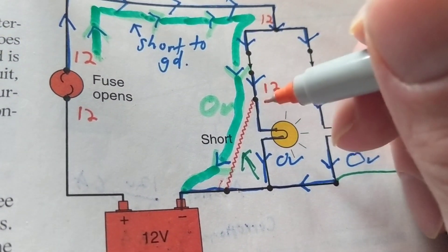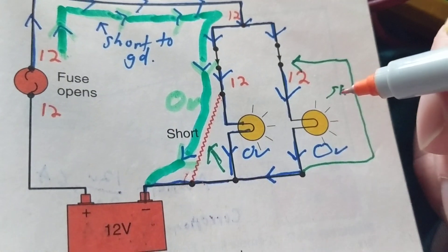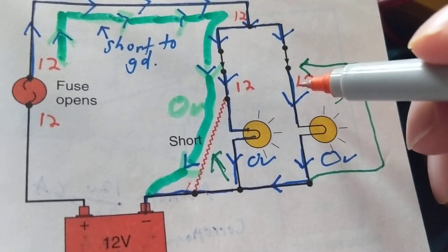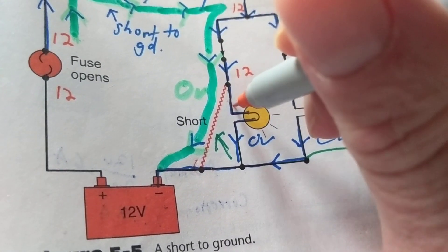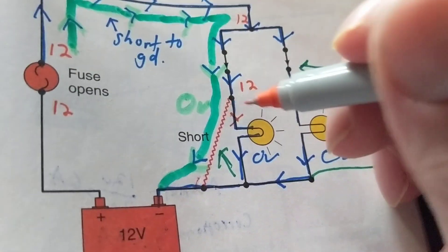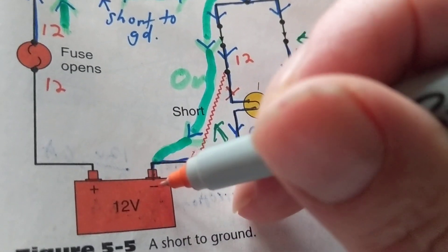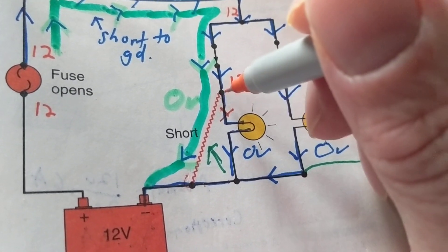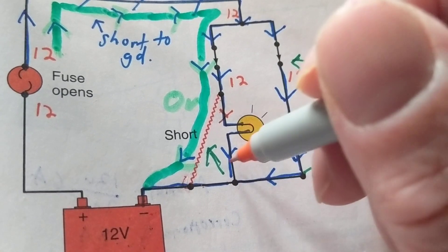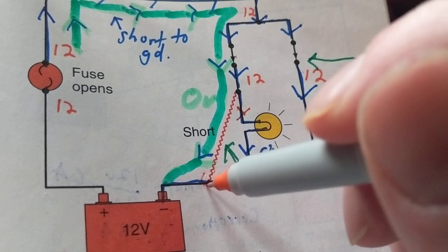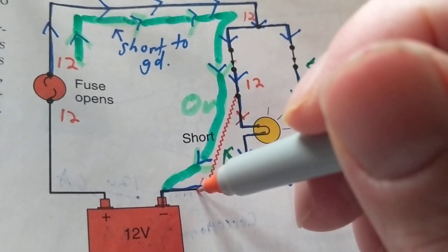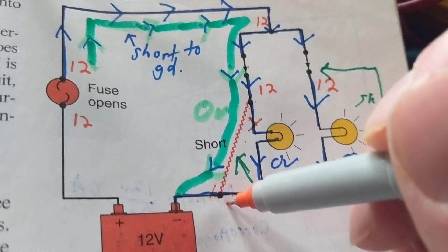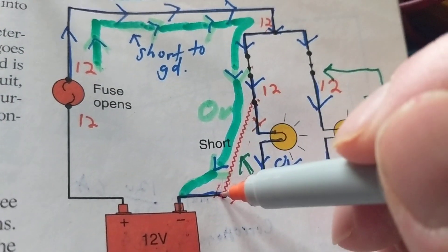When a short is placed here, it completely bypasses the load. A viewer asked: if I put a short here, why does it bypass the other bulb too? The wire broke and touched ground or the ground terminal of the battery. A short to ground is a dead short — zero ohms. Electrons always look for the path of least resistance, and you can't get lower than zero ohms.